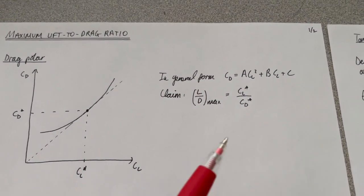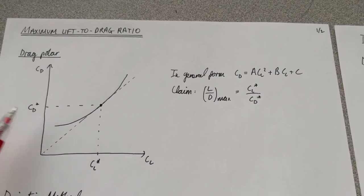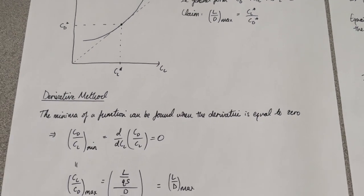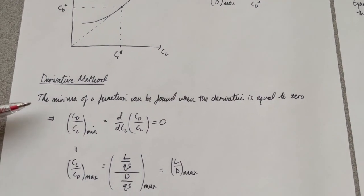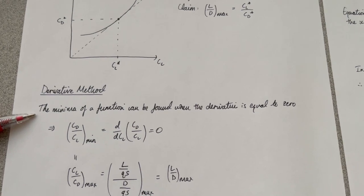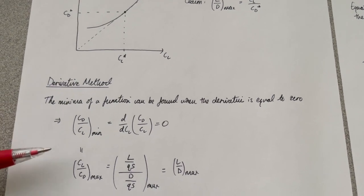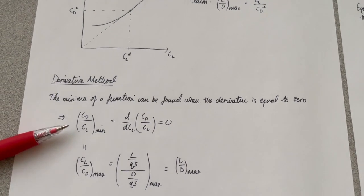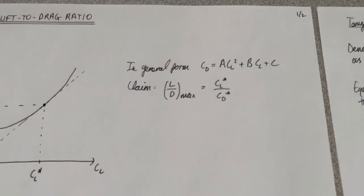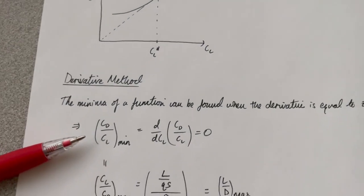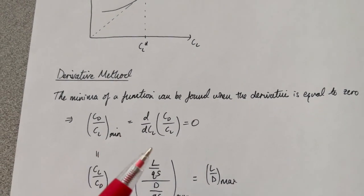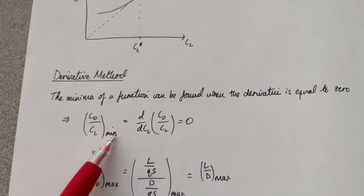I've denoted that point CL* and CD*, and the maximum lift-to-drag ratio is given by CL* divided by CD*. Let's start with the derivative method. The minimum of a function can be found when the derivative is equal to zero, so I'm going to take CD divided by CL and minimize that function by setting d/dCL of that function equal to zero.